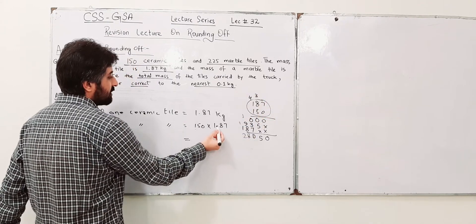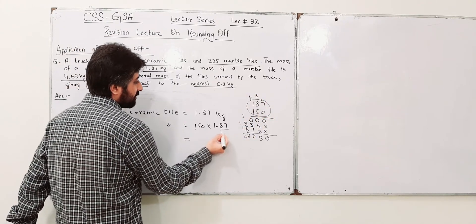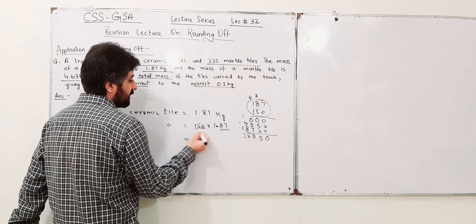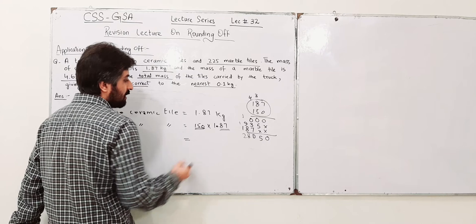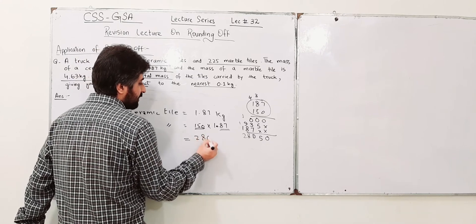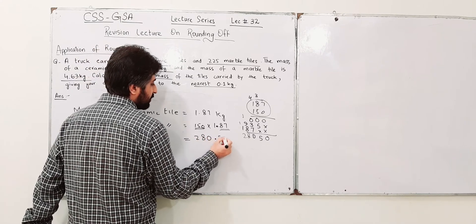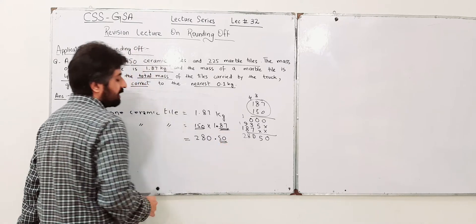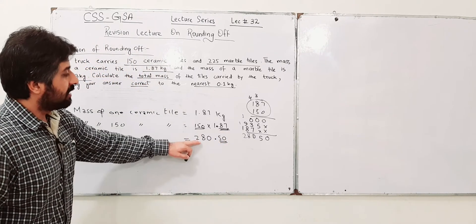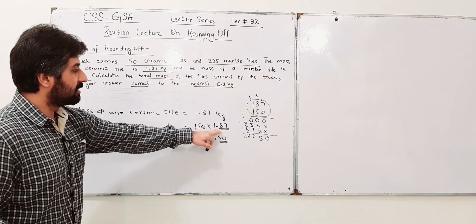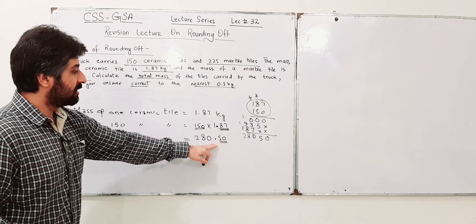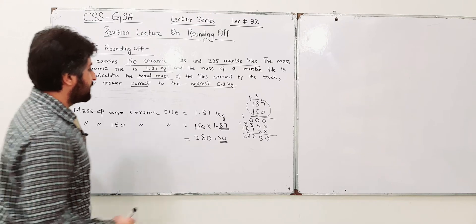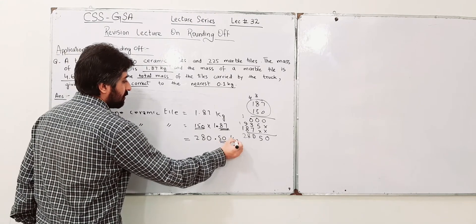But we have to insert the decimal. Here I have two digits after the decimal. Here I have no digit after the decimal. So I am going to write it as 280.50 because I have two digits after the decimal. This is the answer as well. In the question, two digits after the decimal; in the answer, two digits after the decimal. This is mass of 150 ceramic tiles.